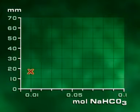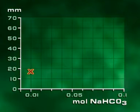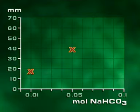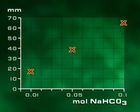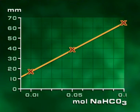With a 0.01 molar hydrogen carbonate solution, the bubble is 19 millimetres. At a concentration of 0.05, the bubble is 39 millimetres. At 0.1 molar, the bubble is 64 millimetres. As CO2 concentration increases, so does the size of the oxygen bubble.